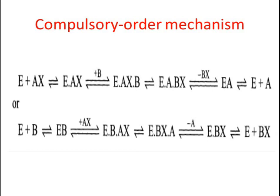E plus AX gives E-AX complex. Then another substrate B will bind to this complex which will give the complex E-AX-B which converts into E-ABX. BX will leave and finally EA complex will form. Then the product A will form and E will leave.